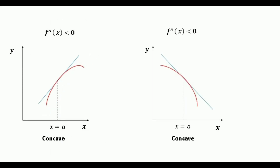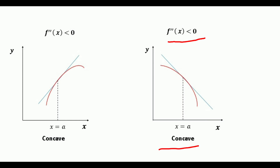Similarly, in the second graph the function also lies completely below its tangent line, so this function is also concave. The negative second derivative at x = a, that is f''(x) < 0, denotes that the function is concave at x = a.